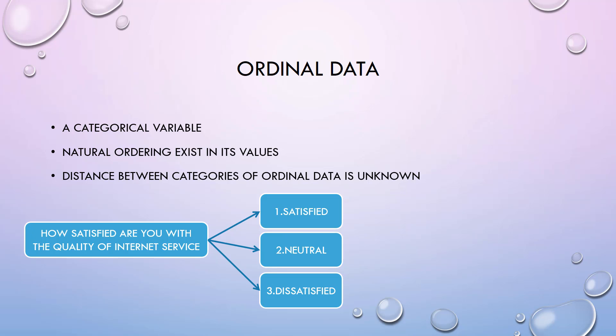With ordinal data, we know that there is a difference between values, but we don't know how much. For example, satisfied is much better than neutral in a survey of the quality of the internet service, but how much better is not clear.